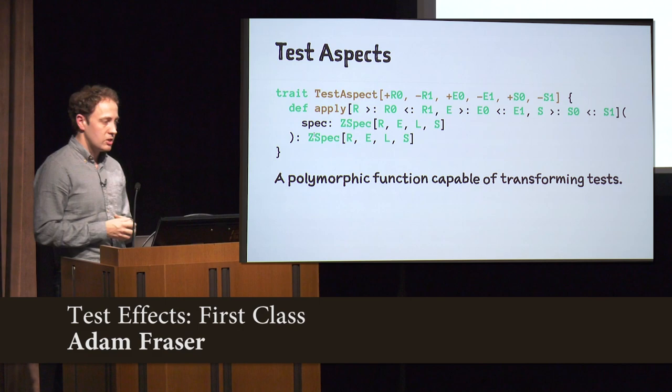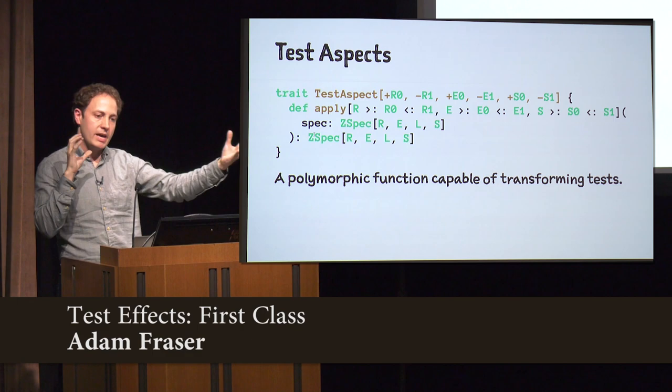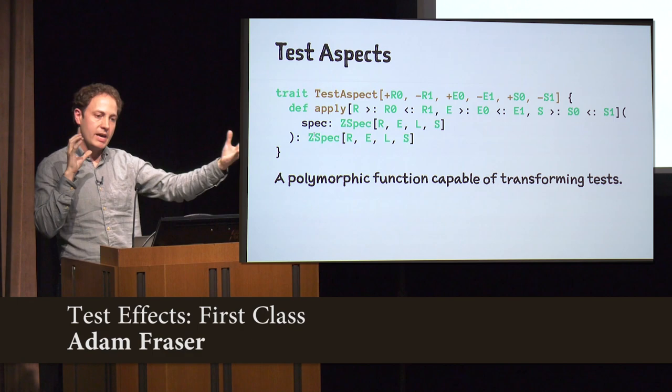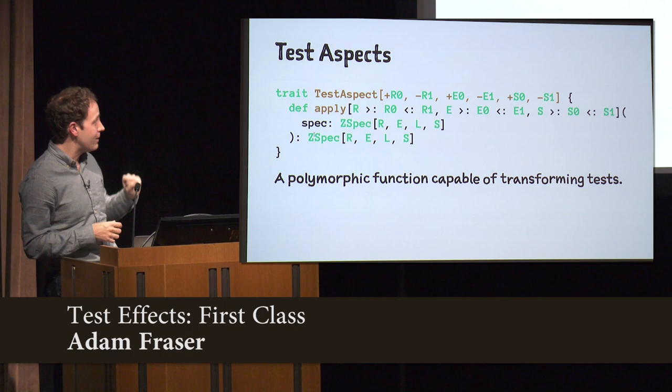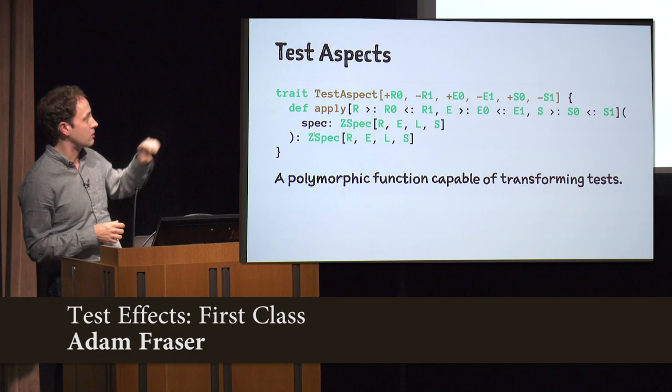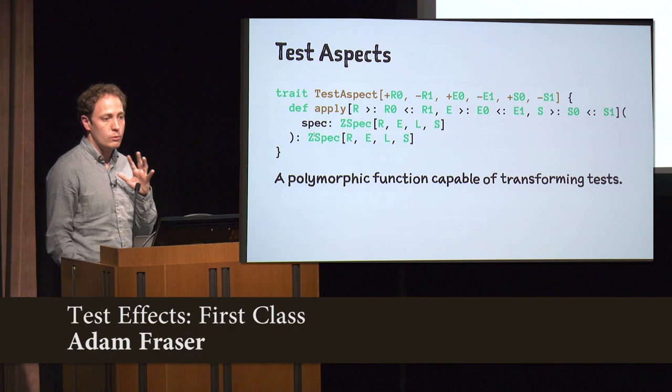The final thing we're able to build on this is called a TestAspect — a polymorphic function from one test to another test, with the possibility of expanding any of those type parameters. We'll see in a second how these can be incredibly powerful and composable for doing a lot of the things we want to do with tests. And despite the somewhat fearsome type signature, this infers almost perfectly — I don't know of any case where you've had to specify the type parameters for this because of the covariance and contravariance there.